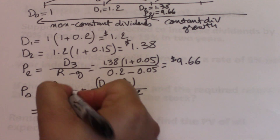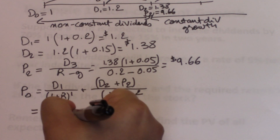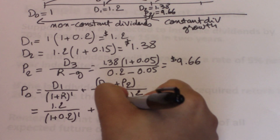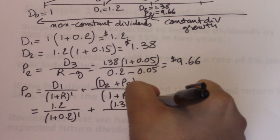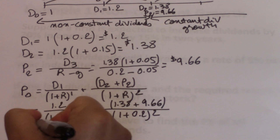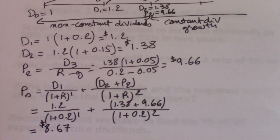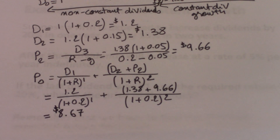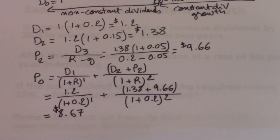P0 = 1.2 / (1+0.2)^1 + (1.38 + 9.66) / (1+0.2)^2, which gives us $8.67. So if you're looking at this investment, the maximum you should pay to achieve a 20% return is $8.67. You can also get this using a financial calculator with the NPV function once you have all the cash flows and have determined P2.